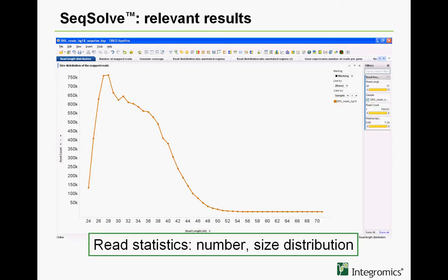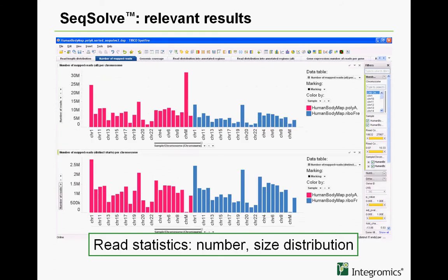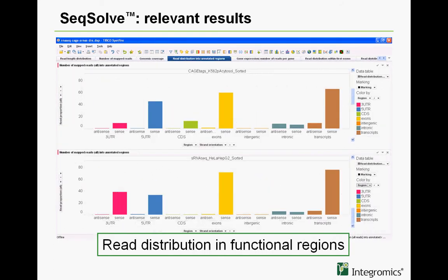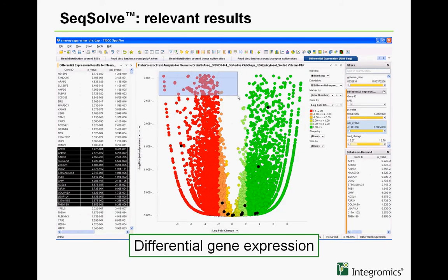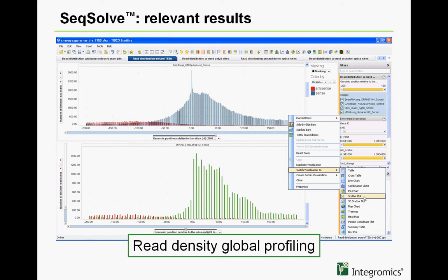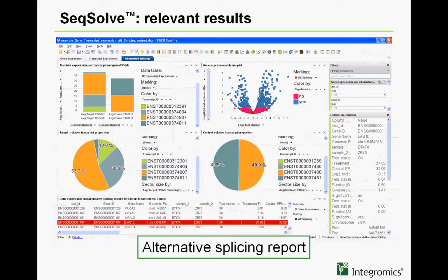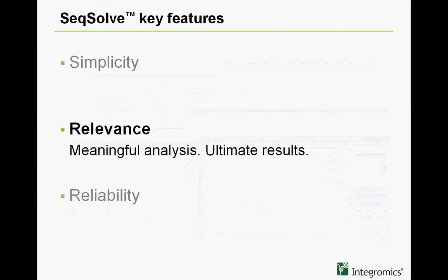Statistics on reads like size distribution, number of reads per chromosome and per sample, and the proportion of reads in functional categories of the genome according to the annotation — exons, introns, intergenic, UTRs, etc. Differential gene expression between groups of experimental conditions, with fold change and p-value for each gene. Genome-wide density profiles, with global distributions of reads within all exons, over all transcription sites or splice sites of the genome. There's also a new ChIP-seq workflow, an alternative splicing study, and much more — relevant analysis and a plethora of results.